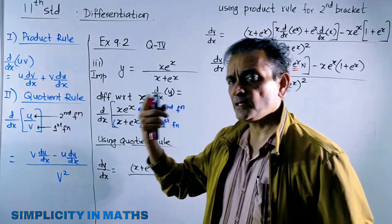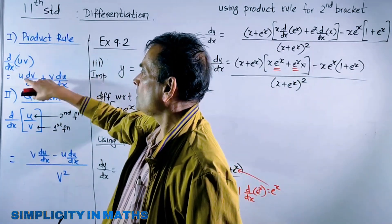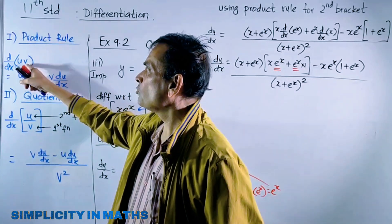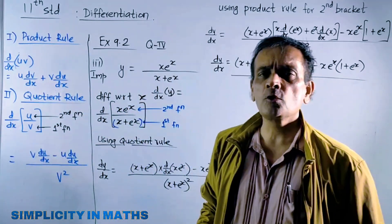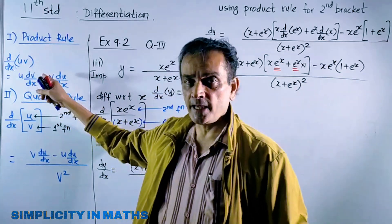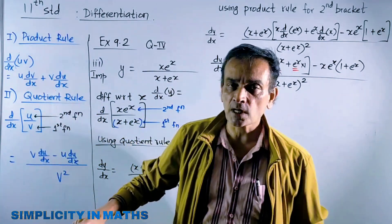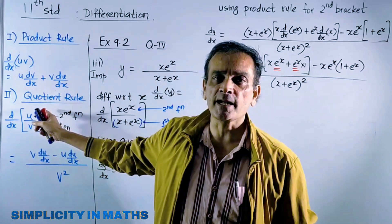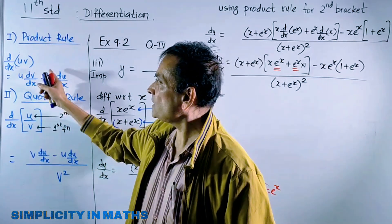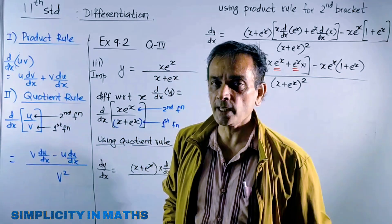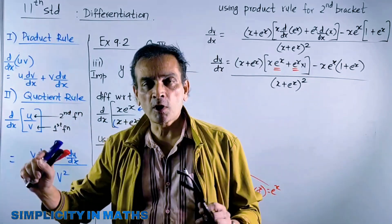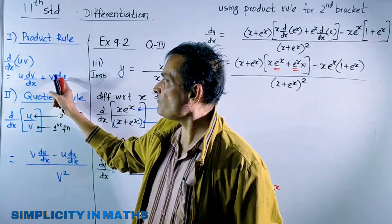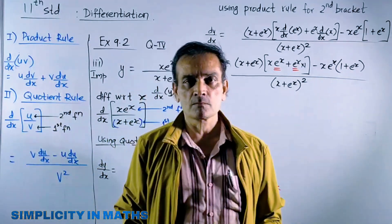As seen in the earlier lecture, the product rule for derivatives: if you have d/dx of u into v, how do you use the product rule? First function times dv/dx, meaning derivative of second, plus second function times derivative of first, du/dx. So the derivative using product rule says: first function times derivative of second, plus second function times derivative of first. Simple.